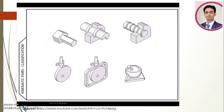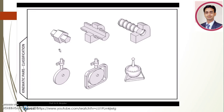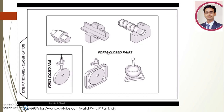Now let us see how to classify them. One criterion for classification could be what keeps the two bodies together. If it is their shape — a prismatic solid engaging in a prismatic cavity, a cylinder engaging in a cylindrical cavity, or a helix engaging in a helical cavity — then the two bodies are kept together by virtue of their shape, and they are called a form closed pair. But if the two are kept together by virtue of some external force, like that exerted by a spring or by gravity, then such a pair is called a force closed pair.